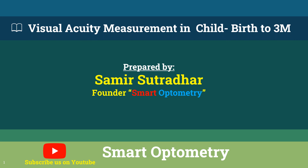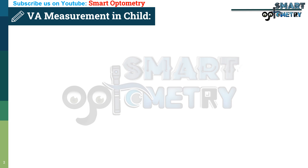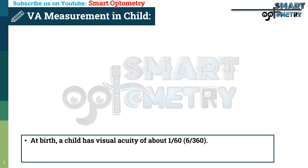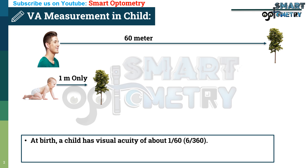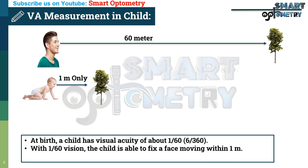Today, I will discuss how to measure visual acuity in a child from birth to 3 months of age. At birth, a child has visual acuity of about 1 by 60 or 6 by 360. That means an object that a normal person can see from 60 meters, a child after birth is able to see from 1 meter only. So you can see how little a newborn can see.